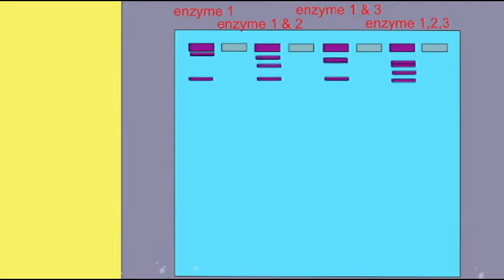Now enzyme 2 obviously only makes one cut, because there were originally two bands of DNA, and in the second lane there are now three. So enzyme 2 made one additional cut.